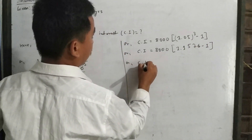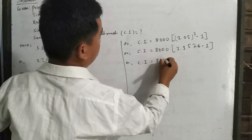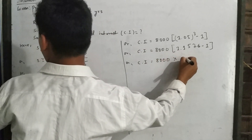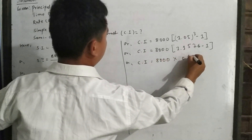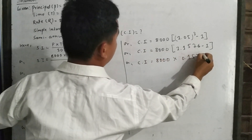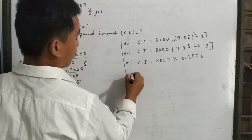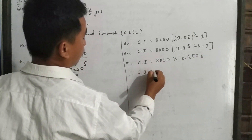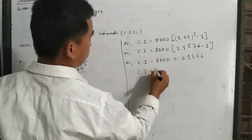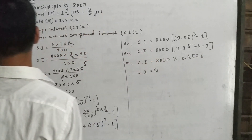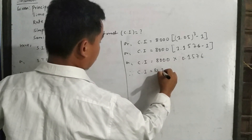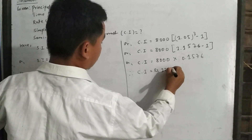Semi-annual compound interest equals 8000 × 0.1576. Therefore, semi-annual compound interest is equal to rupees 1261.